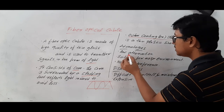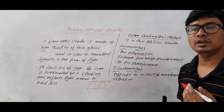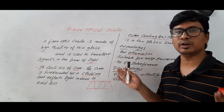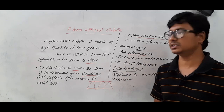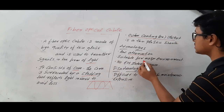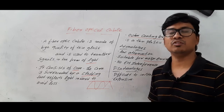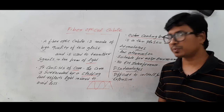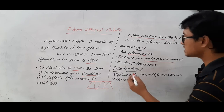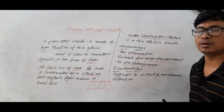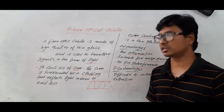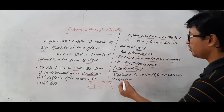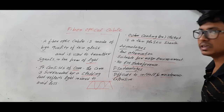Attenuation means the signal loses its strength over distance. However, in fiber optical cables, signals can traverse a long distance, which is why we call it low attenuation. It is also suitable for noisy environments — twisted pair cables and coaxial cables do not work as well in noisy environments. Additionally, fiber optical cables have less electromagnetic interference compared to twisted pair and coaxial cables.